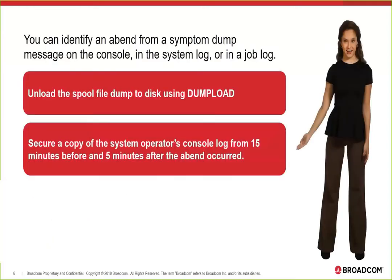You'll spit out the dumps, get messages on the consoles, a system log or what they call a sys log. A job log is an information dump that helps you. A lot of times the window when there is an ab-bend is 15 minutes before and five minutes after. You want to get the op log or the operator's console log to see what was going on — if there was some sympathy sickness 15 minutes before that led to the ab-bend, whether CPU utilization or some other issue. There is a log associated with every ab-bend.